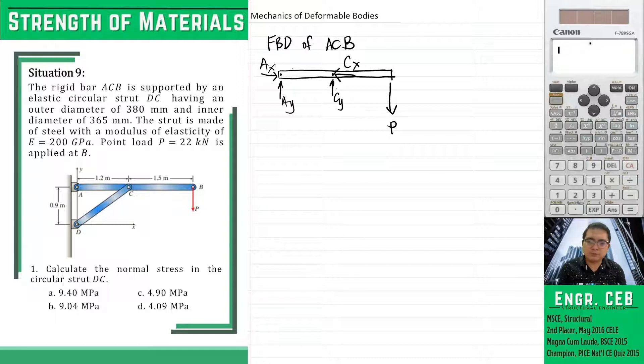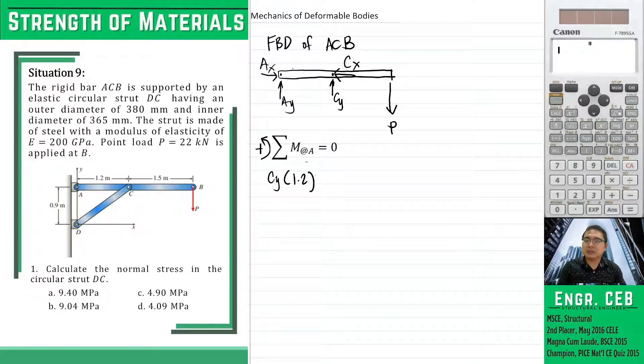Suppose that we want to solve for the reaction at C. We should sum moments about point A. Summation of moment about A equals 0. Let's say our sign convention is positive counterclockwise. So we have CY times moment arm of CY is 1.2. And then the moment of P about point A, we have P times 1.2 plus 1.5. Because the distances are 1.2 meters from A to C and 1.5 meters from A to B.